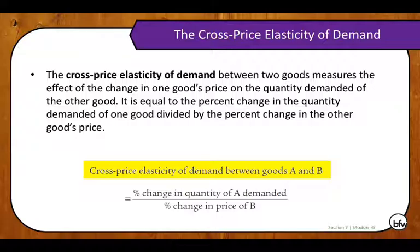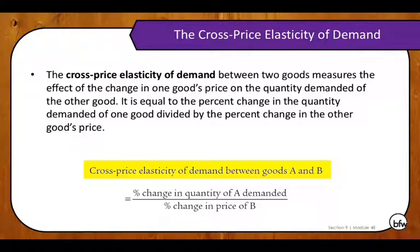As the formula on this slide suggests, it is the percent change in the quantity of good A divided by the percent change in the price of good B. This is how it differs from the price elasticity of demand: when we looked at price elasticity of demand, we looked at the percent change in quantity demanded of good A relative to the percent change in the price of good A. But now we're looking at the percent change in quantity demanded of good A relative to the percent change in the price of another good, good B — that's why we call this the cross-price elasticity of demand.